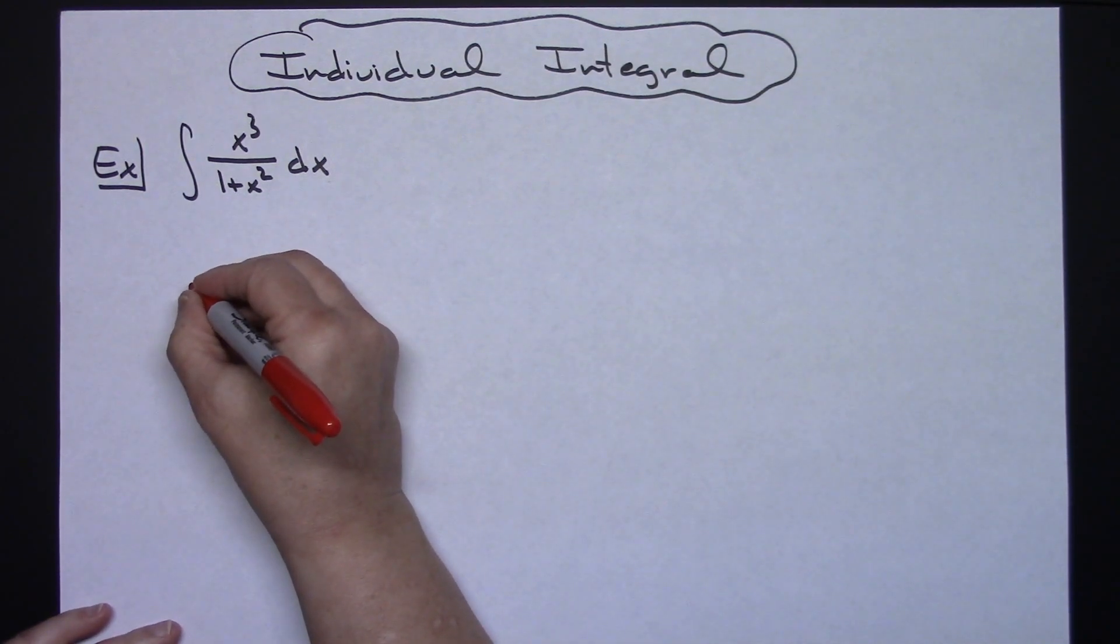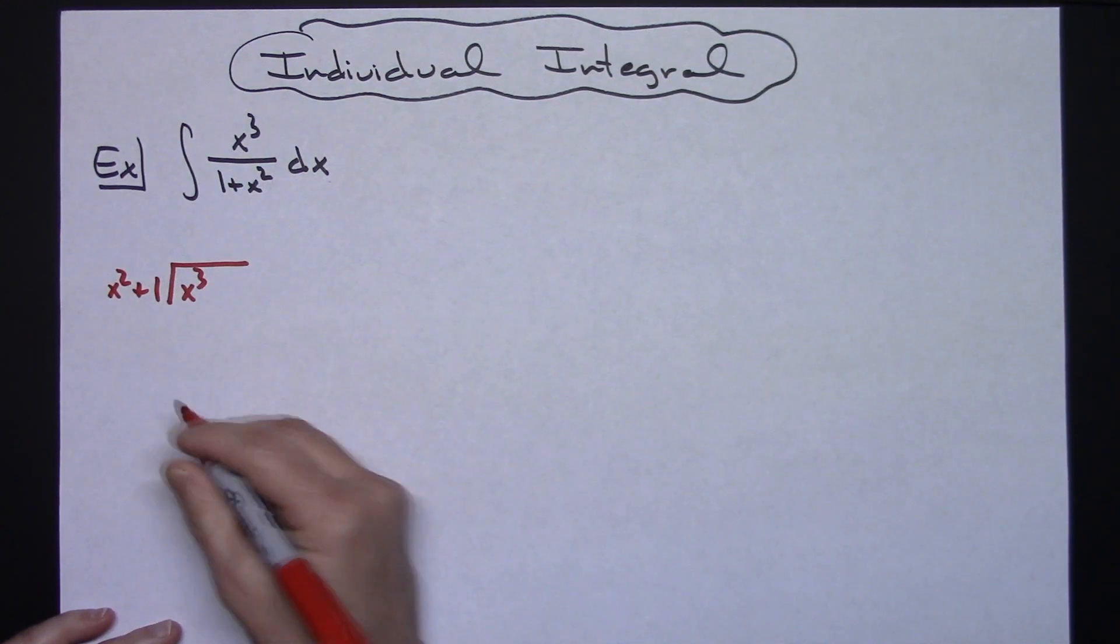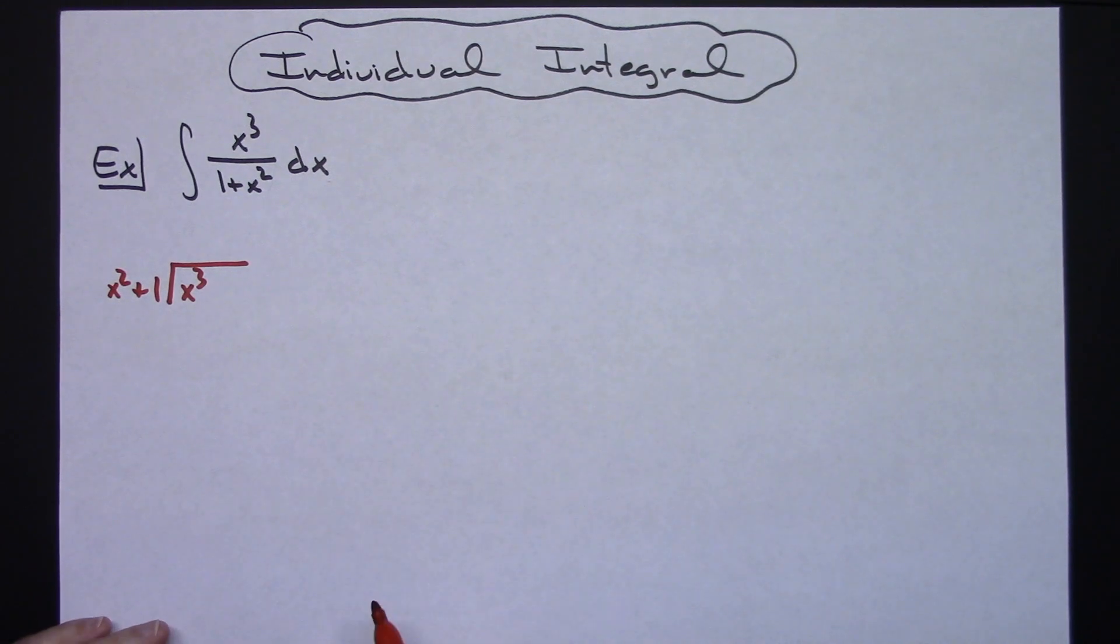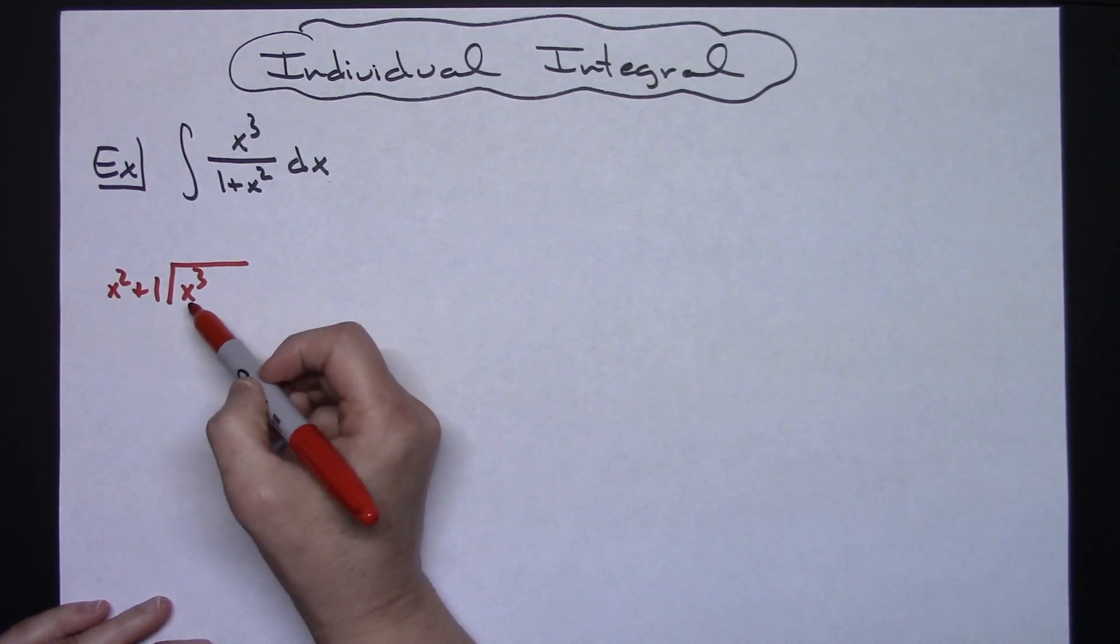Here we're going to take our x to the third, put it on the inside of the box, and we'll put the—I think I'm going to go ahead and go x squared plus one on the outside just so it makes the polynomial division here a little bit more straightforward.